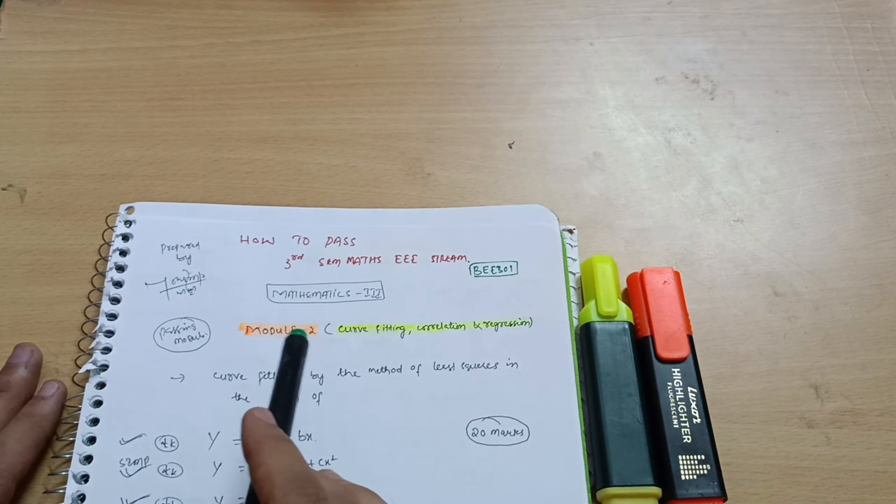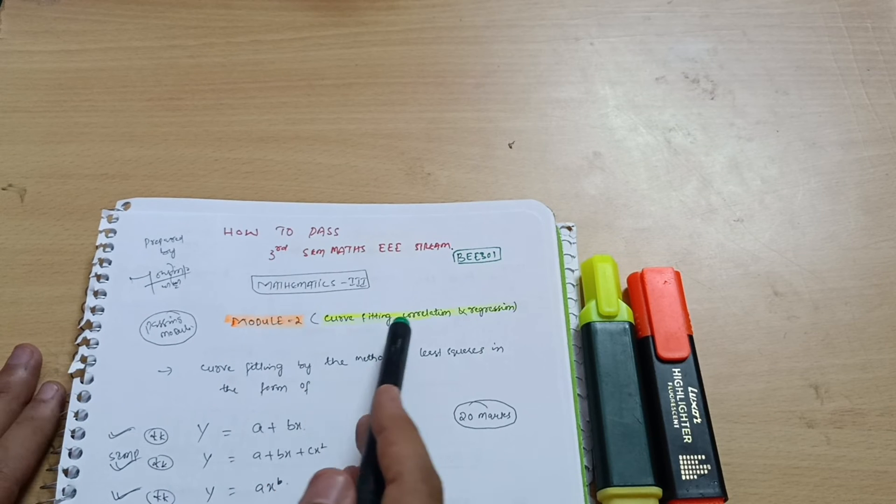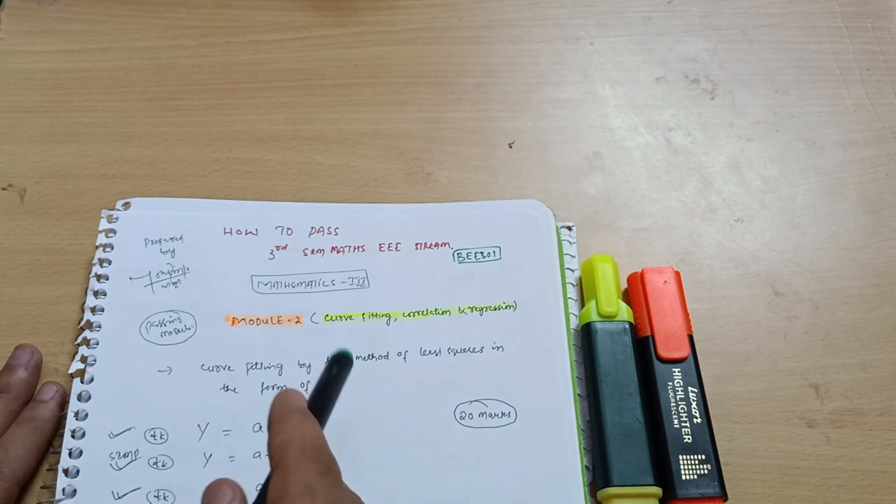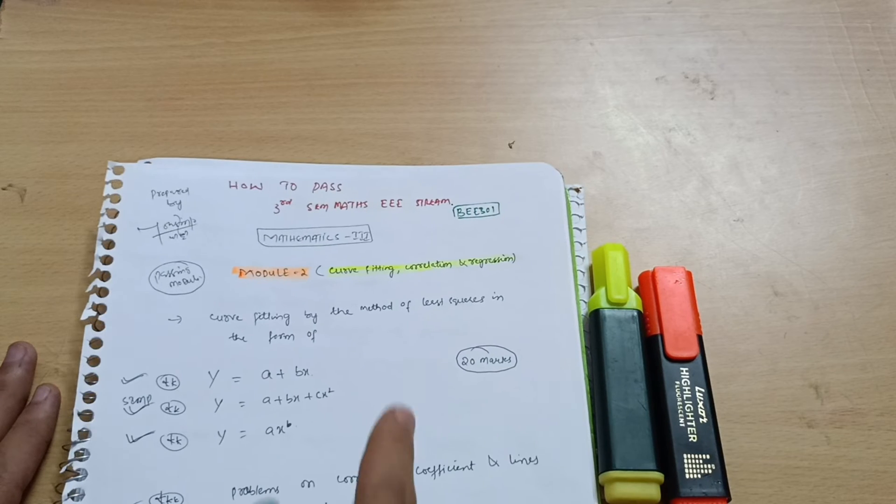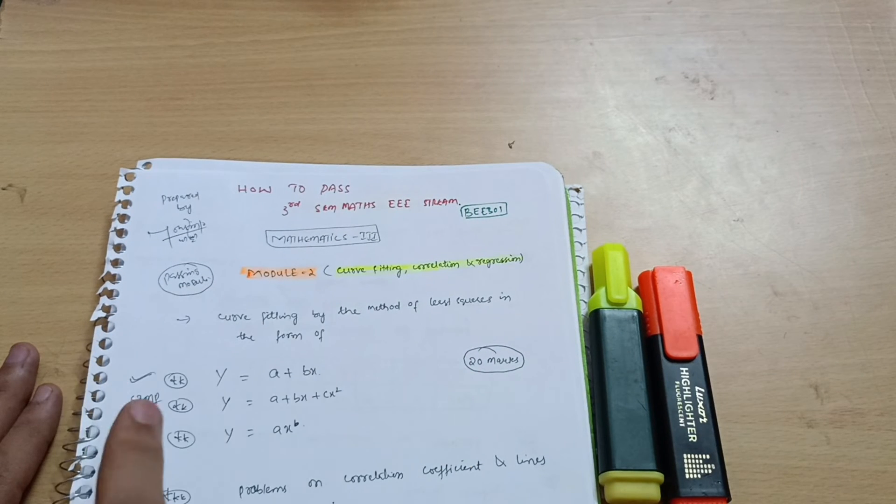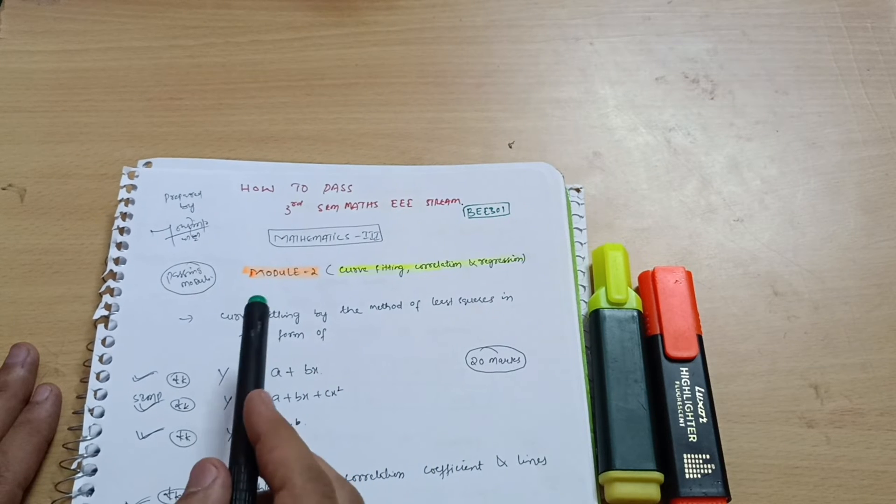Let me discuss here the passing module first. Passing module, which is Module 2, that is Curve Fitting, Correlation, and Regression, which is the simplest chapter, simplest module as far as all the modules are concerned in this particular subject. You should not miss this chapter at all as 20 marks are just in your pocket. I am saying this one as this is the simpler module over here.